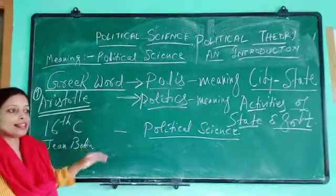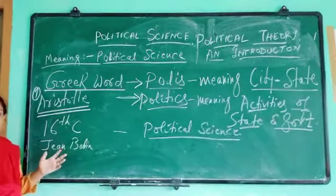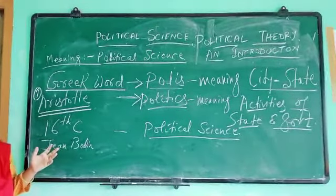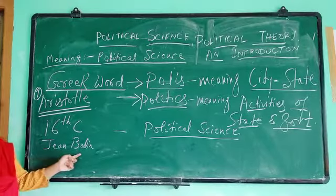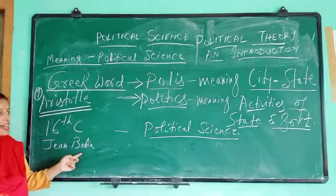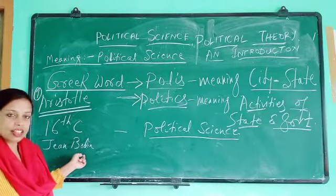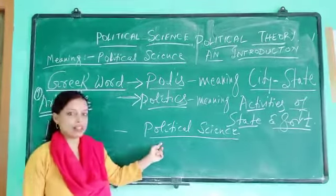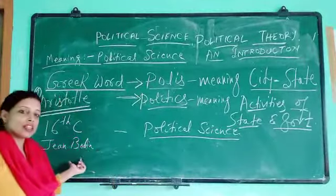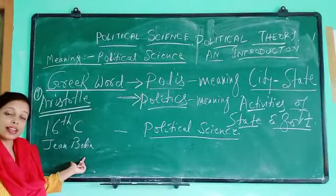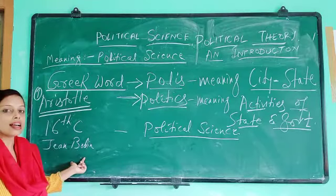These things again changed in the sixteenth century. In the sixteenth century, a modern political philosopher came. His name is Jean Bodin. He gave a different term for political science, and that term is 'political science.' So right from the sixteenth century till today, political science is known by the term 'political science.'